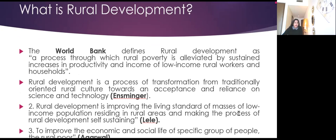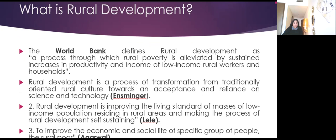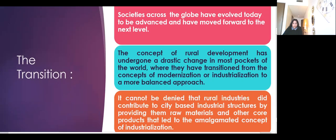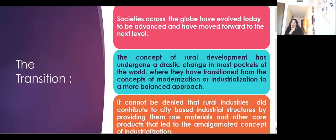Agarwal defines rural development simply as improving the economic and social life of a specific group of people — that is, the rural poor. This is the definition of rural development. Now, what is the transition and at what stage have we reached today? Societies across the globe have evolved to be advanced and have moved forward to the next level. The concept of rural development has undergone a drastic change in most parts of the world.